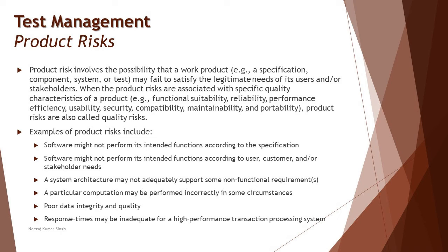Some examples: software might not perform its intended function according to the specification — what was the requirement is not fulfilled. Software might not perform its intended function according to user, customer, or stakeholder needs — it may do the fundamental job but the customer had something different in mind. A simple example: a name field should accept only characters — everyone knows that — but the customer wanted to accept characters up to 10 only. Making it 20 characters could be a problem. So the functionality may be working but not as per the customer's expectations. The system architecture may also not support certain non-functional requirements.